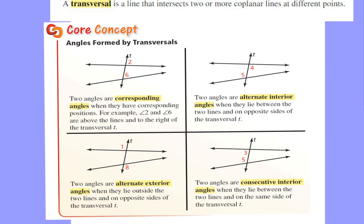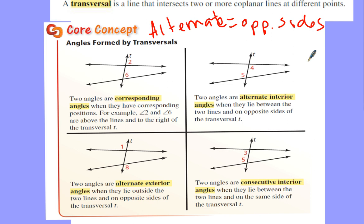Now let's look at alternate interior angles. The word 'alternate' means on opposite sides of the transversal. 'Interior' means in between the two lines being cut by the transversal. A lot of teachers call the two lines the 'hamburger buns,' so anything interior is in between the buns of the sandwich. So alternate interior angles are on opposite sides of the transversal but in between the two lines.